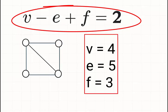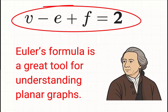Example 2, a square with a diagonal, four vertices, five edges, three faces, two triangles in the outer face. Using the formula, 4 minus 5 plus 3 equals 2, again it holds. Euler's formula is a great tool for understanding planar graphs.